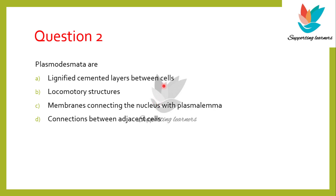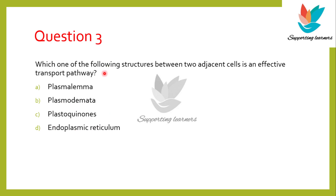Question number 2: Plasmodesmata are — A) lignified cemented layers between cells, B) locomotory structures, C) membranes connecting the nucleus with plasma membrane, and D) connections between adjacent cells. Question number 3: Which one of the following structures between two adjacent cells is an effective transport system? A) plasma membrane, B) plasmodesmata, C) plastokinones, and D) endoplasmic reticulum.